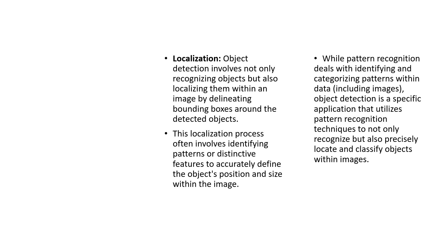To conclude and summarize: pattern recognition deals with identifying and categorizing patterns within data, which can include images. Object detection is a specific application that utilizes pattern recognition techniques to not only recognize but also precisely locate and classify objects within images. That's the major difference — pattern recognition identifies and categorizes patterns within an image, while object detection goes a step above by also locating and classifying objects within images.